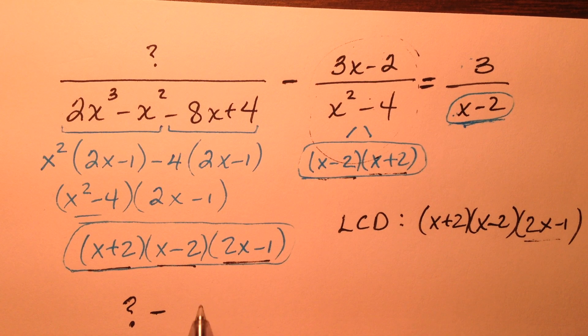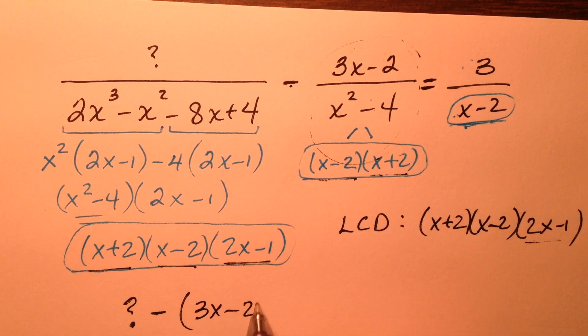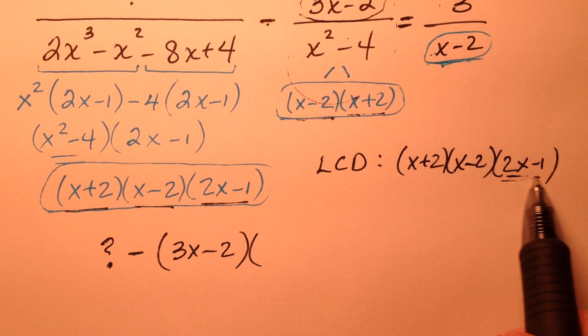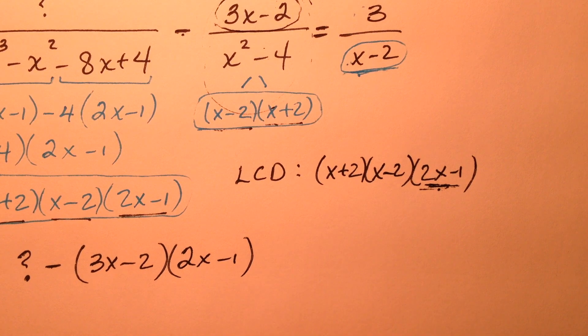So the question mark minus, we have the 3x minus 2 in parentheses, because this is the entire numerator, and what am I going to do with that numerator? Well, I'm going to multiply it by the missing factor, 2x minus 1.